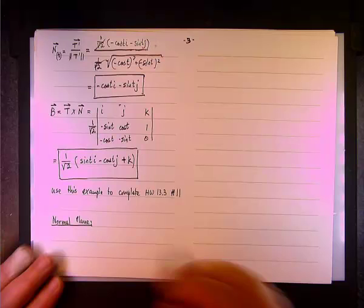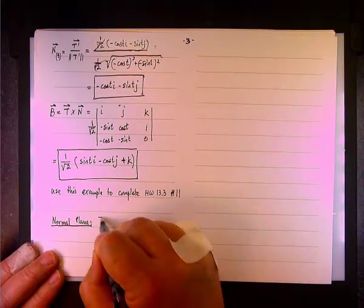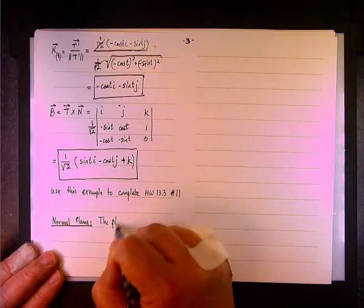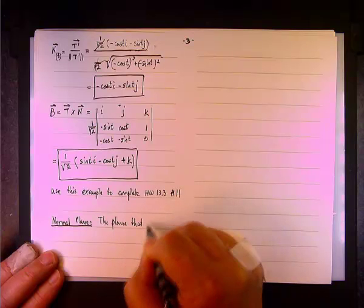And since two vectors are enough to determine a plane, we're going to say that the normal plane is the plane that is determined